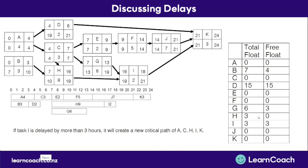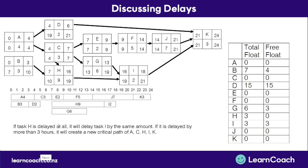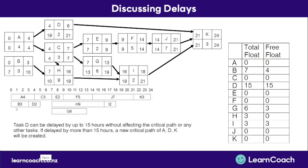Task A has a free float of zero hours, meaning if it's delayed at all, it will delay task I — the only task that depends on task A. Task A's total float is three hours; if delayed by more than that, it will extend the project's minimum completion time and create a new critical path of A, C, H, I, K. Task D has a free float and total float of 15 hours — if delayed by more than 15 hours, it will extend the project's minimum completion time and create a new critical path of A, D, and K.